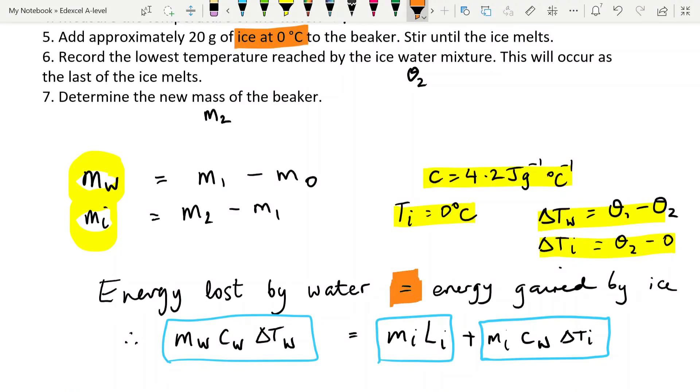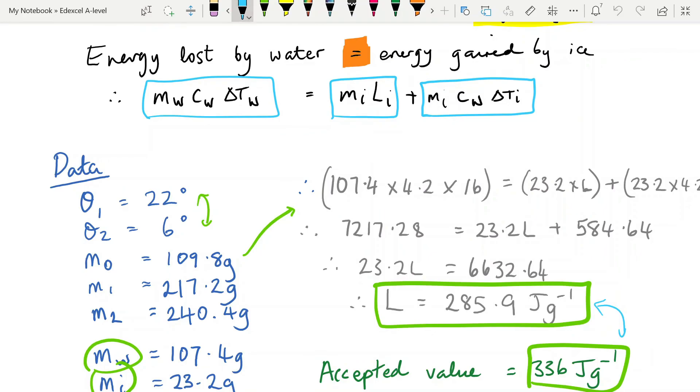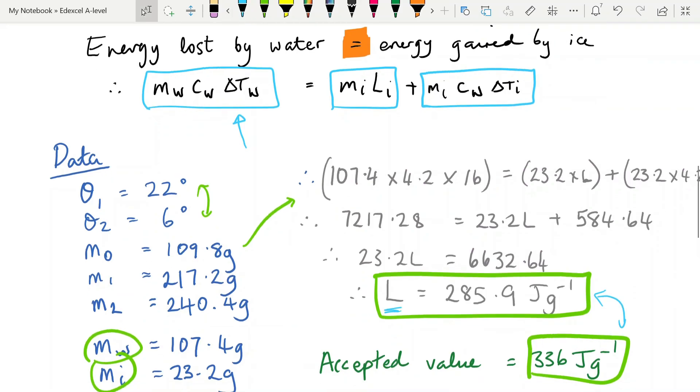Our other pretty big assumption here is that the only energy that's gained by the ice is that that it's lost by the water. And of course, while we've lagged our beaker, and we're doing our best to try and prevent environmental heat from coming in, that is impossible to prevent entirely. So you are going to get some heat coming in from the surroundings. And so the energy gained by the ice will be more than that actually lost by the water. This means, of course, that the left-hand side of our expression would be smaller than it should be, leading us to a smaller value of L, which is indeed exactly what we got. So the difference between our L and the accepted value could be accounted for by some energy coming in from the environment in order to melt the ice.